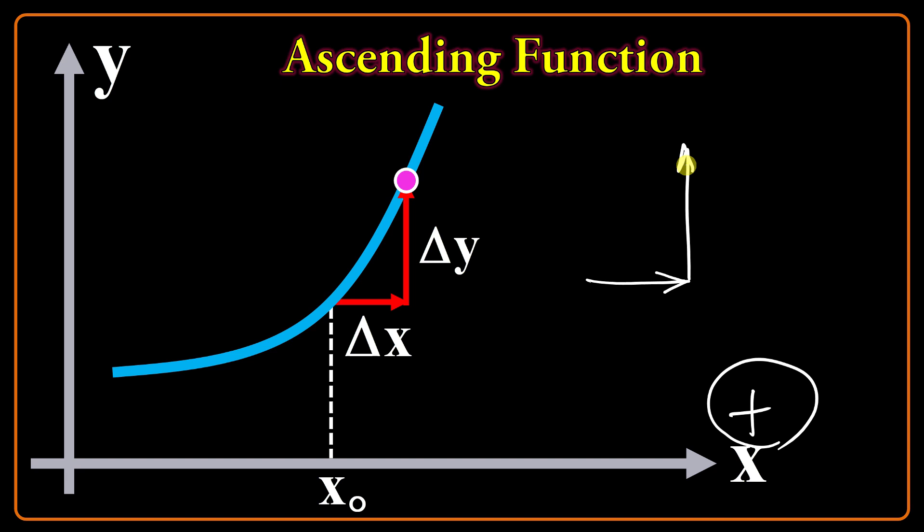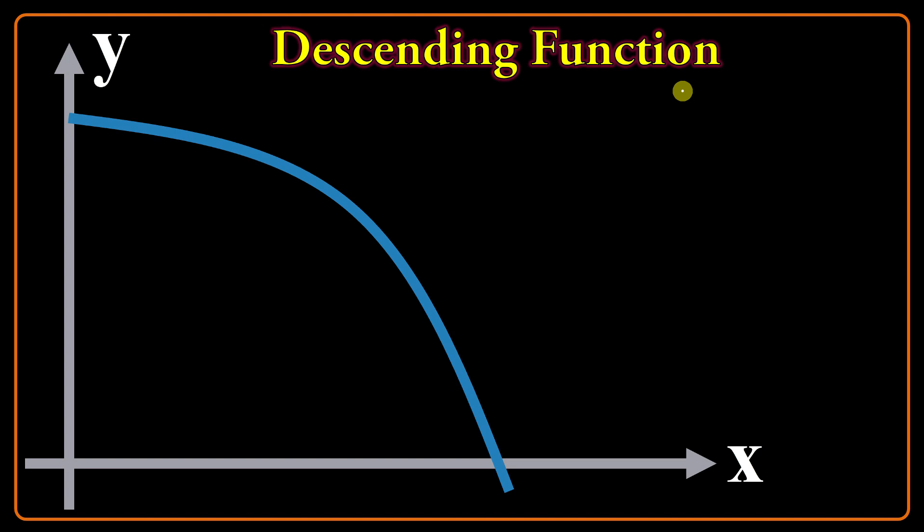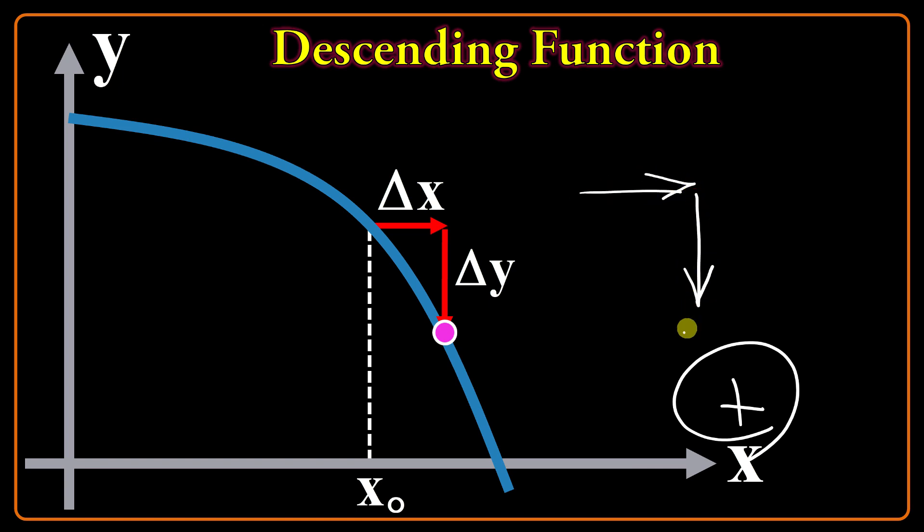The other could be descending function. If I select a point like this and then I go again to the positive direction of x, I will lose the function. But this time, for finding the function, I should go downwards. As you see, then I will again go back to the function. So one step to the right, a few steps downwards to find the function. This is why it's descending function.